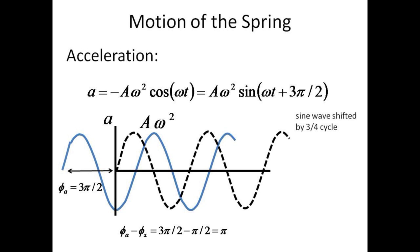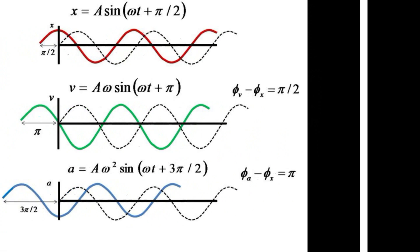The negative cosine function is equivalent to advancing the phase of a sine function by three quarters of a cycle, or three pi over two radians. If we examine the phase difference between the position and the acceleration functions, we expect a phase difference of pi radians. In summary,